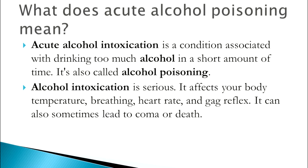There are two types of poisoning: acute poisoning and chronic poisoning. Acute poisoning occurs when a large amount of alcohol is taken in a very short amount of time. In the case of chronic poisoning, it is the opposite — small amounts of alcohol are consumed over a very long period of time. We will start with acute alcohol poisoning.